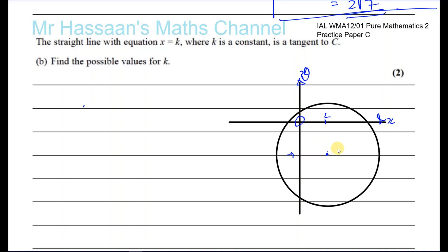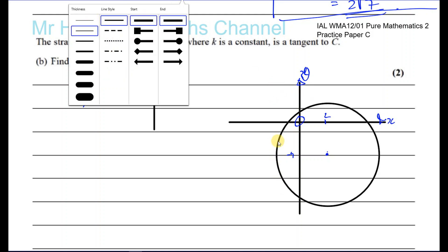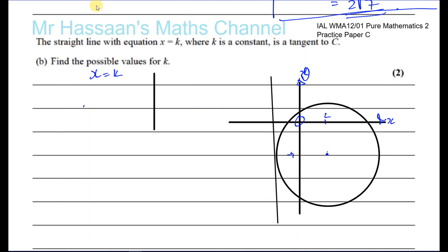It says that the equation x equals k, where k is a constant. x equals k is basically a vertical line going through k on the x-axis. For it to be a tangent to the circle, there's two possible values for it. There's two possible places where it's going to be tangent. One is here, one is at this point. That's one place where it could be a tangent. And the other place is over here on this side.